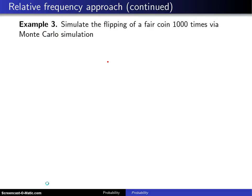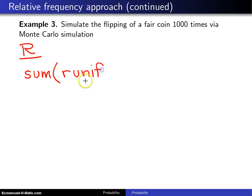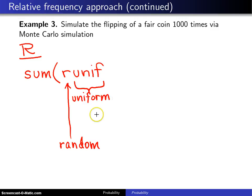Example 3 involves simulating the flipping of a fair coin 1,000 times by Monte Carlo simulation in the language R. The solution uses SUM on the outside, and inside it starts with the function RUNIF — where R stands for random and UNIF stands for uniform — which generates random uniform values between 0 and 1 by default. We generate 1,000 of them using RUNIF(1000).